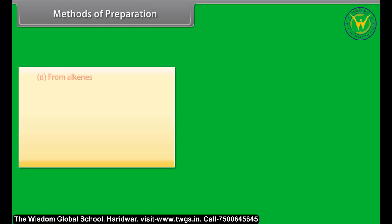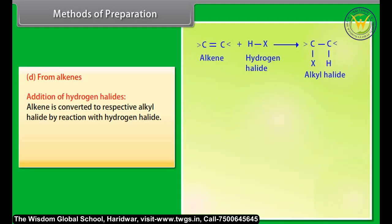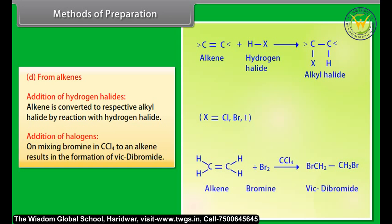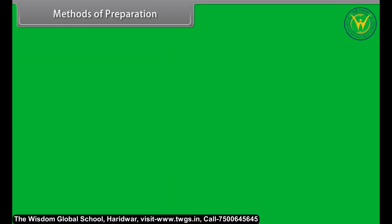From alkenes, by addition of hydrogen halides: an alkene is converted to the respective alkyl halide by reaction with a hydrogen halide. By addition of halogens: on mixing bromine in CCl4 with an alkene, it results in the formation of a vic-dibromide.